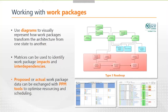We can use different views to understand different aspects of these work packages. For example, we can use matrices which help us understand not just the impacts of what work packages are affecting, but also where there are actual or implied interdependencies between work packages. For example, where multiple work packages are going to impact a single application, we might want to put a dependency between those work packages or actually bring them together as a single consolidated unit of work.